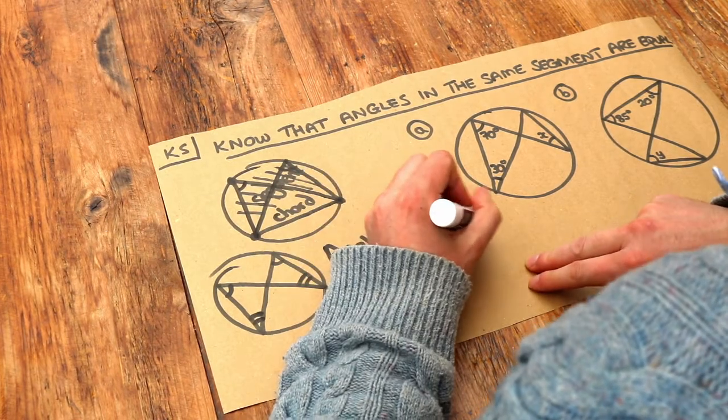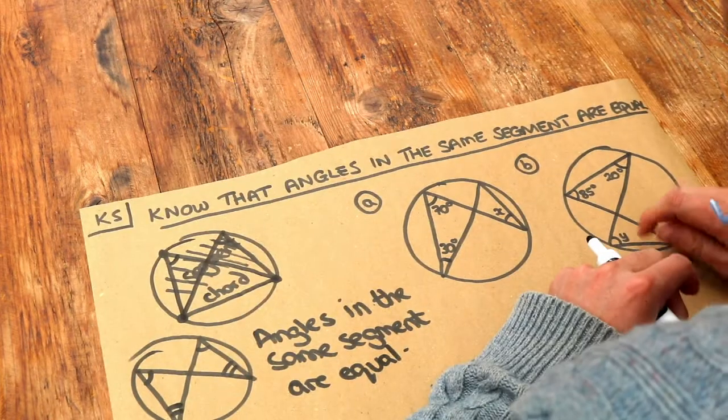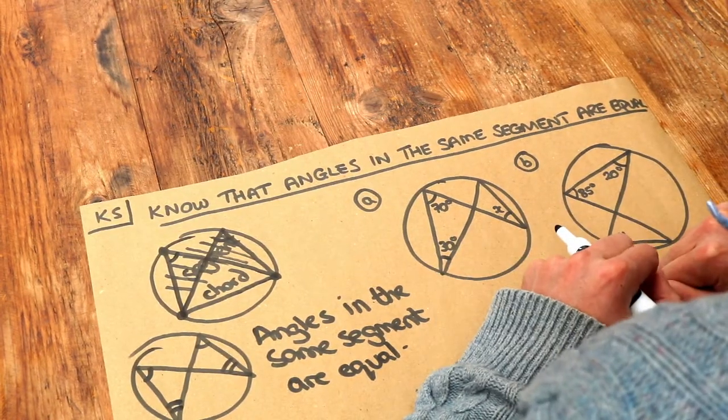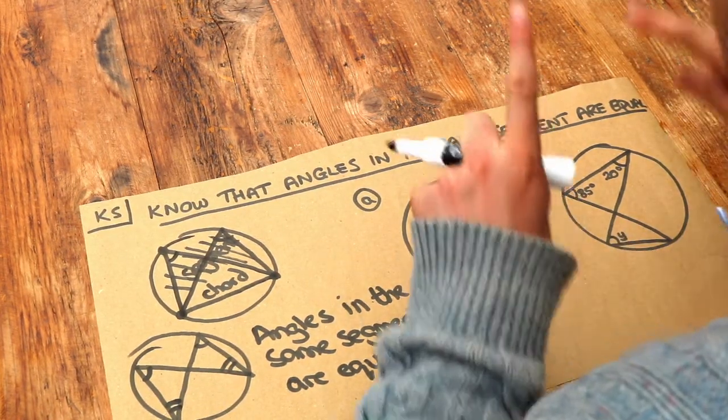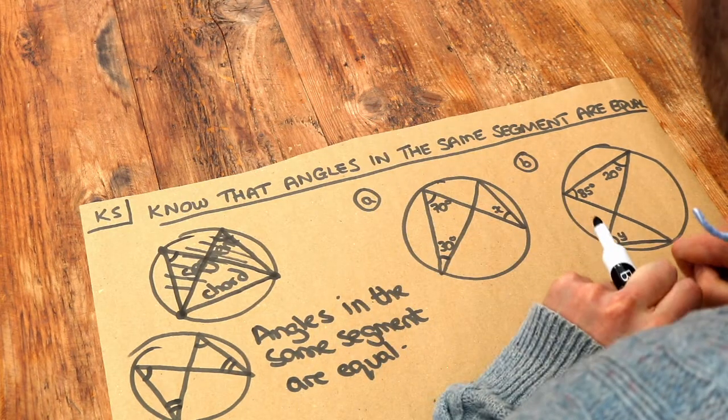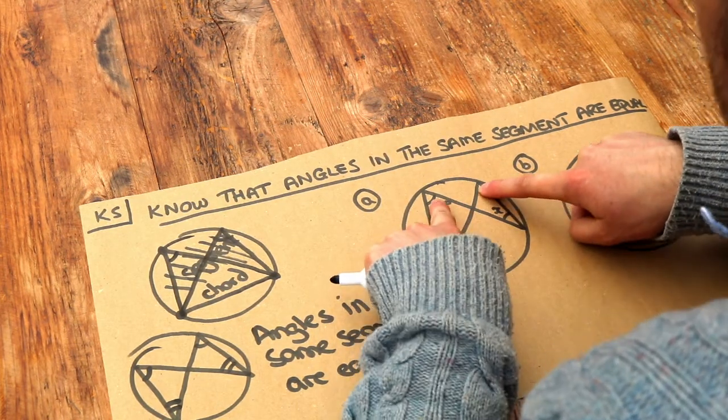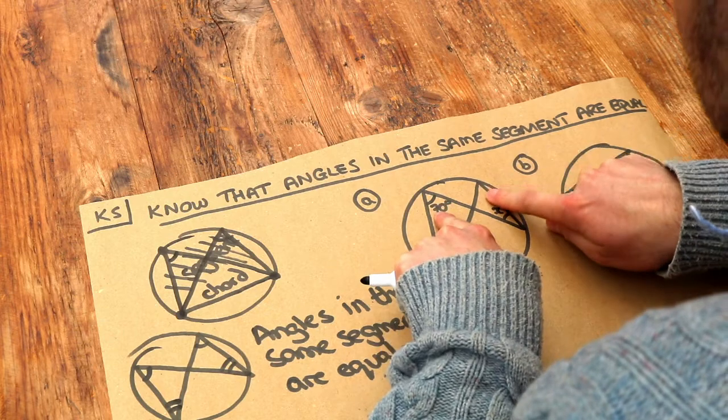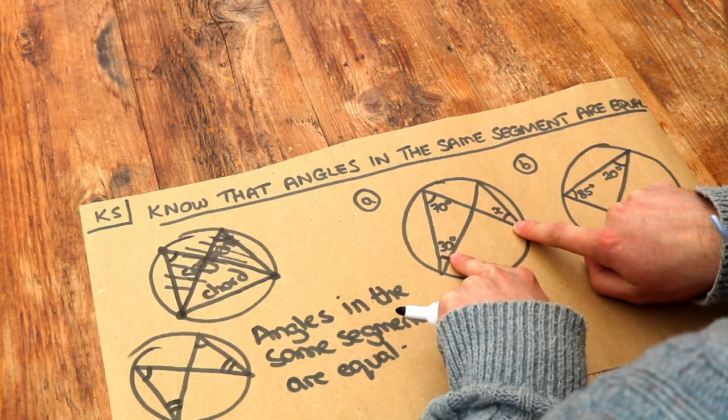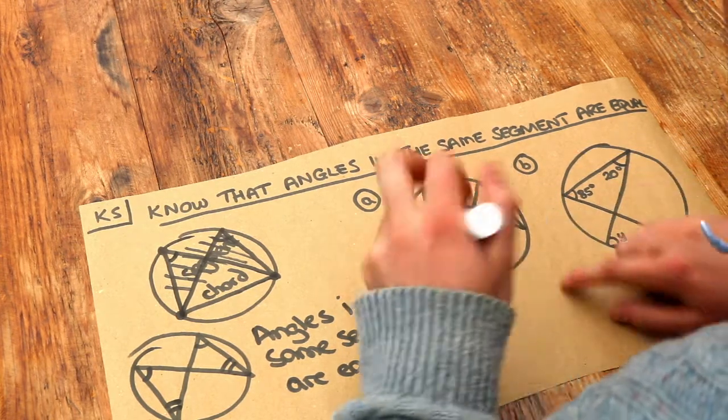Now let's apply that to these examples here. We've got this bow tie type thing so we can use angles in the same segment are equal. And remember the angles have to be the same end of the bow tie. So the angles at the top of that bow tie will both be the same. So those will both be 70 and the angles at the bottom will both be the same. So that X must be equal to 30.